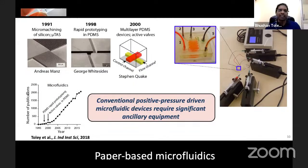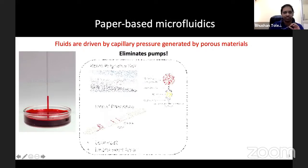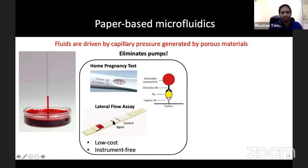This is where paper-based microfluidics comes in. These are platforms in which fluids are driven by capillary pressure generated by porous media, completely eliminating pumps — the same phenomenon by which water rises up a glass capillary due to surface tension. A good example is the rapid home pregnancy test, a lateral flow assay where fluid is introduced at one end, wicks from left to right, rehydrates dried reagents, and flows over lines where a certain chemistry occurs — if a certain antigen is present, a colored line appears.